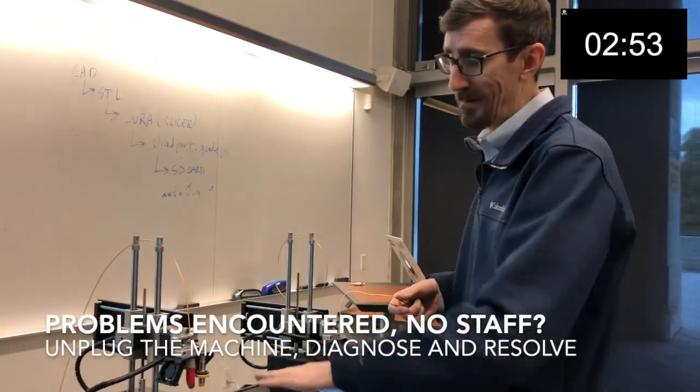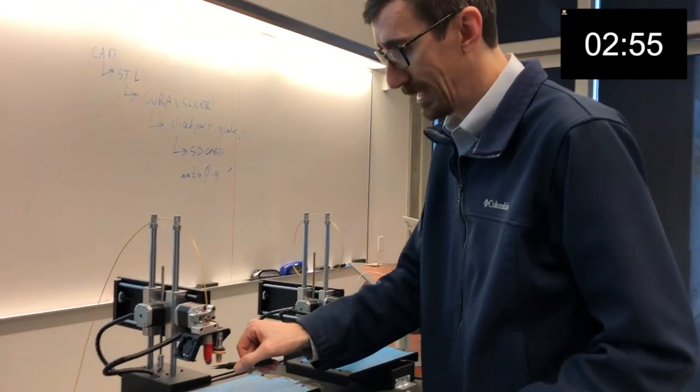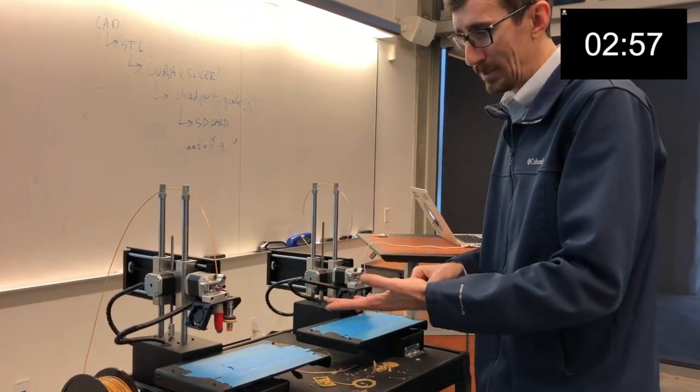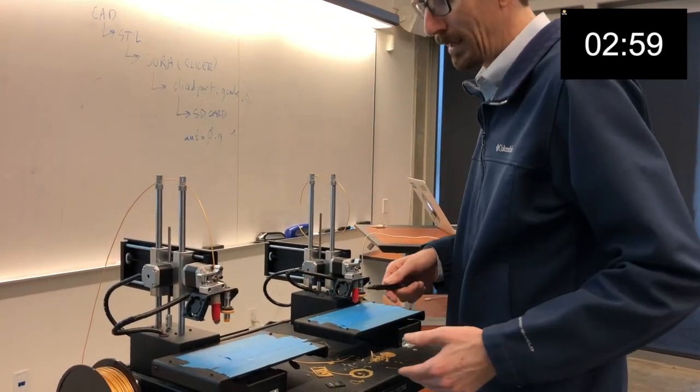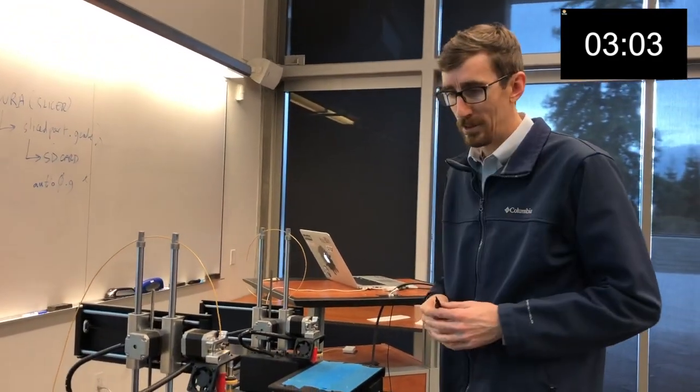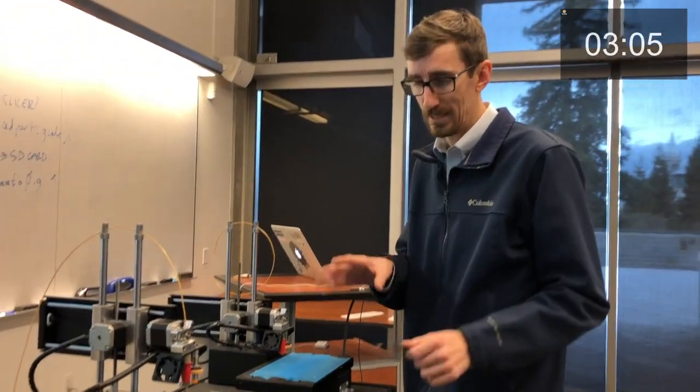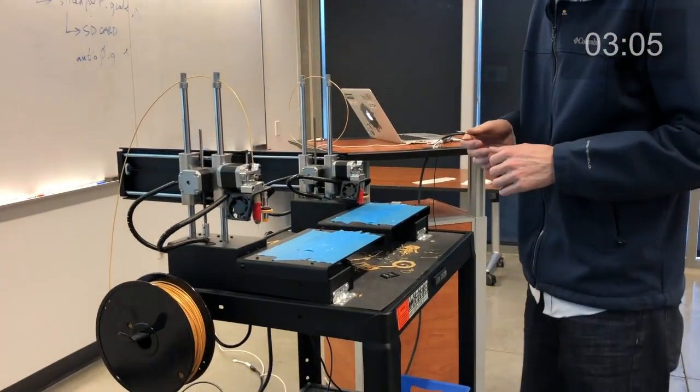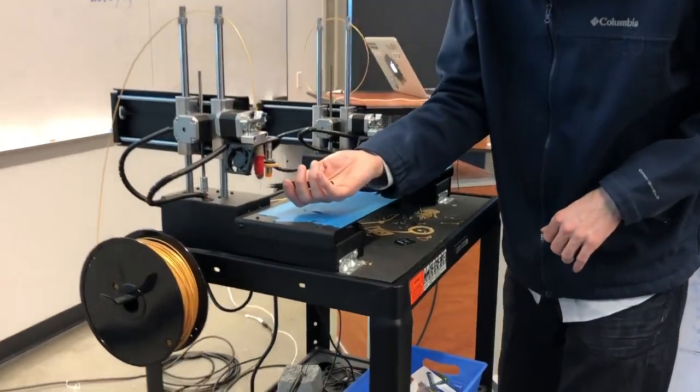It's going to move the tray all the way to one side and the gantry for the extruder nozzle all the way to the back. It's going to hit its limit switches, then come all the way down. This orange sensor is going to tell it when to stop. You can have issues if that sensor isn't calibrated correctly.